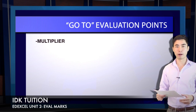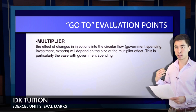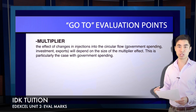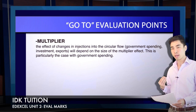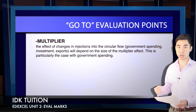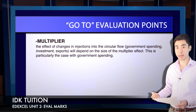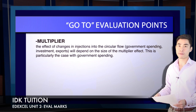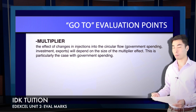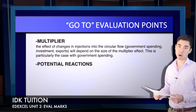Moving on to size of the multiplier effect. If we're talking about injections into the circular flow — in particular government spending — you can evaluate this by discussing the size of the multiplier effect. If the government spending multiplier is large, the effect of government spending on real GDP is going to be quite pronounced, whereas if the multiplier is minimal, any increases to government spending are going to have a limited effect on real GDP growth.